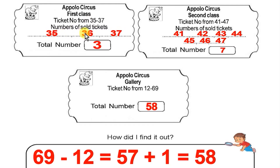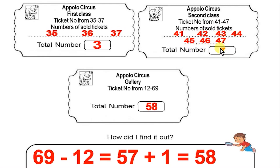35, 36, 37 — that is 3 tickets. Second class ticket: 41 to 47. How many tickets? 41 to 47. 41, 42, 43, 44, 45, 46, 47 — total 7 tickets.